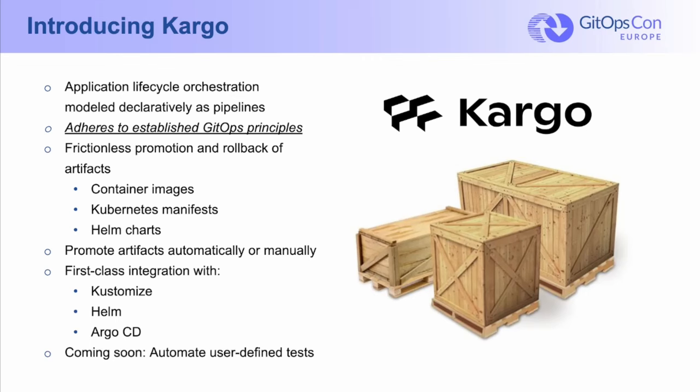It also optionally integrates with a subproject called Kargo Render that can use configuration management tools like Kustomize or Helm to render Kubernetes manifests as plain YAML stored in a stage-specific branch. There are some really interesting advantages to expanding your YAML before Argo CD, Flux, or whatever you're using to manage deployments gets its hands on it. My colleague Christian Hernandez is doing an entire session on just that topic, and I really suggest that everybody check that out as well. At this point, I'm going to hand it over to Jesse, who's going to show you Kargo in action.